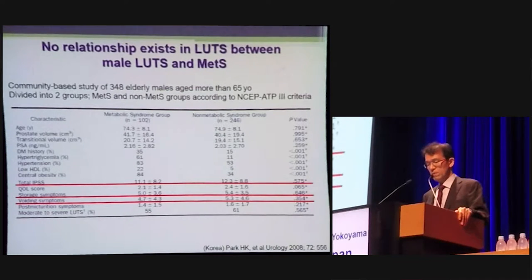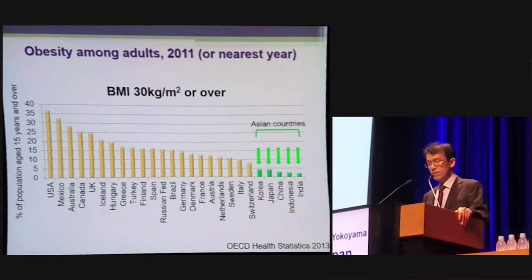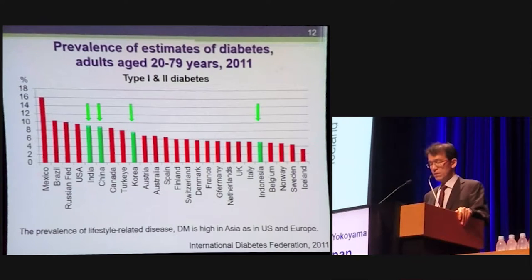It is possible that the negative association is due to racial differences or a decrease in obesity with age in Japan and Korea. In fact, the prevalence of obesity with BMI greater than 30 is markedly lower in Asia than in the US and Europe. Even if the prevalence of obesity is low in Asian countries, that of lifestyle-related disease is high, as in the US.